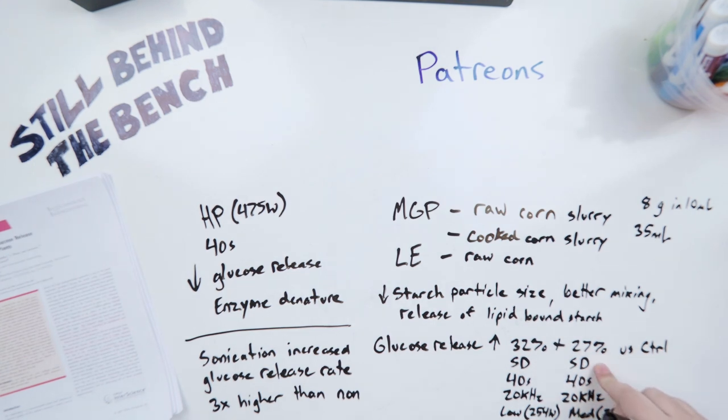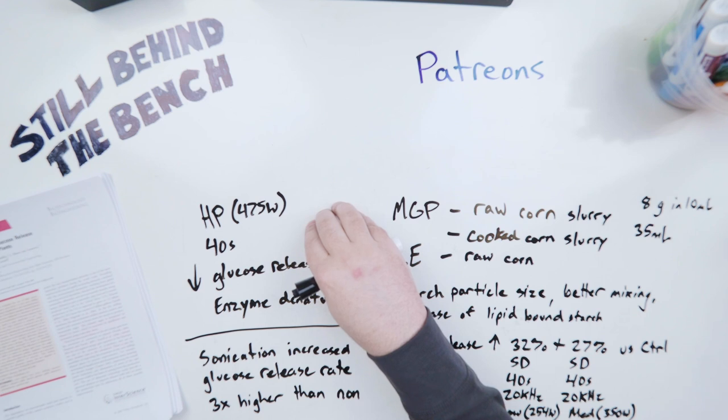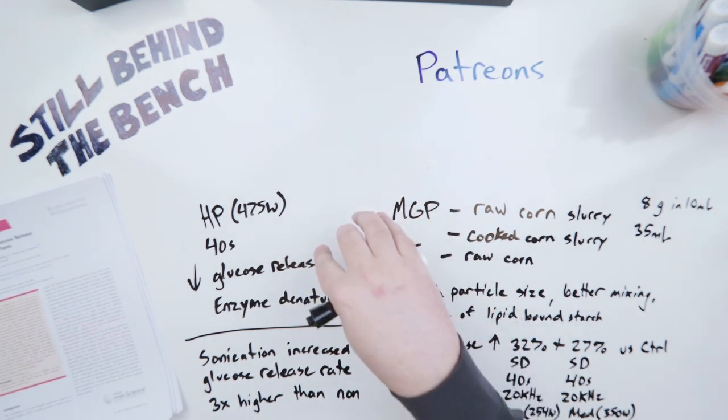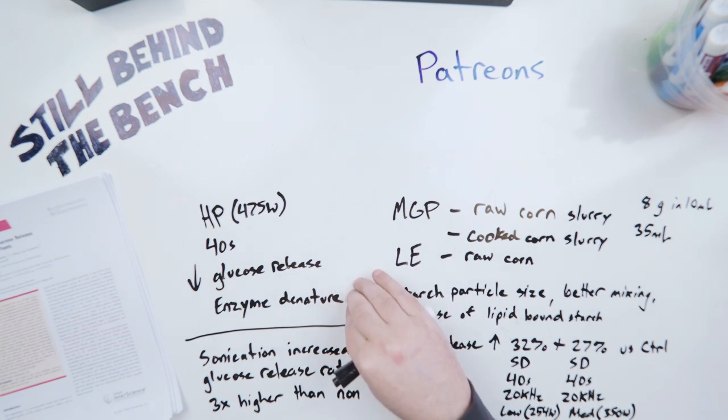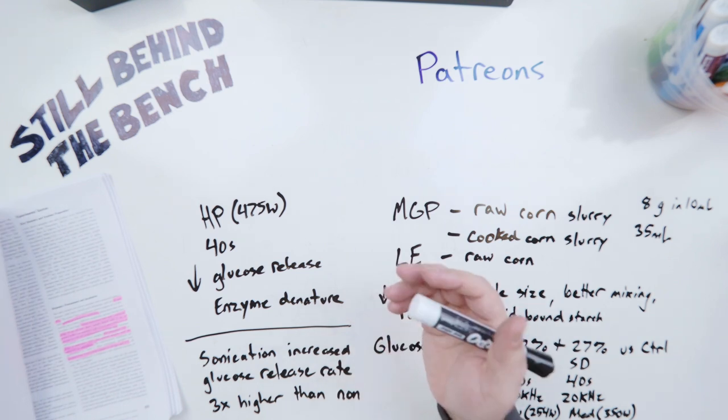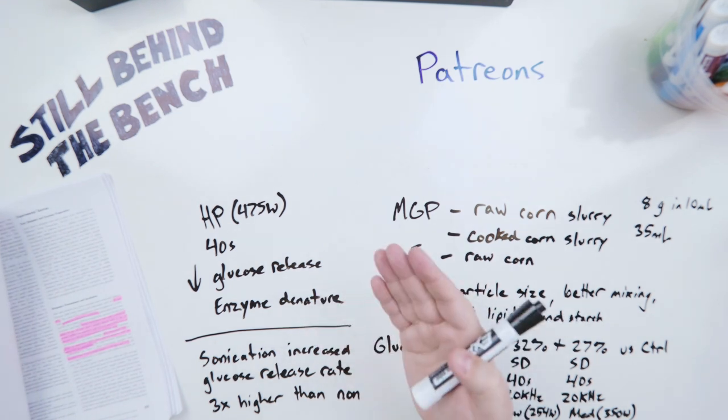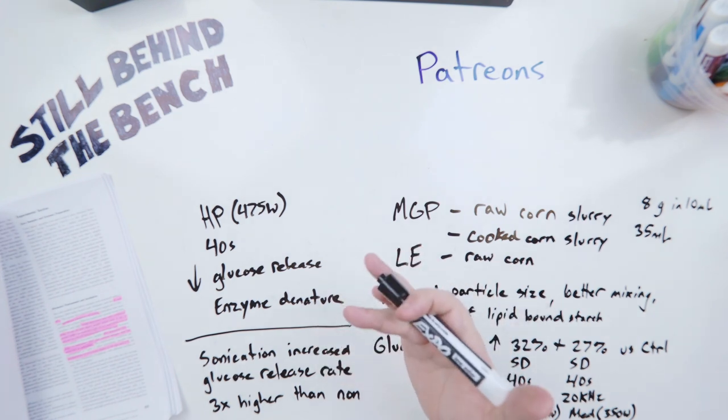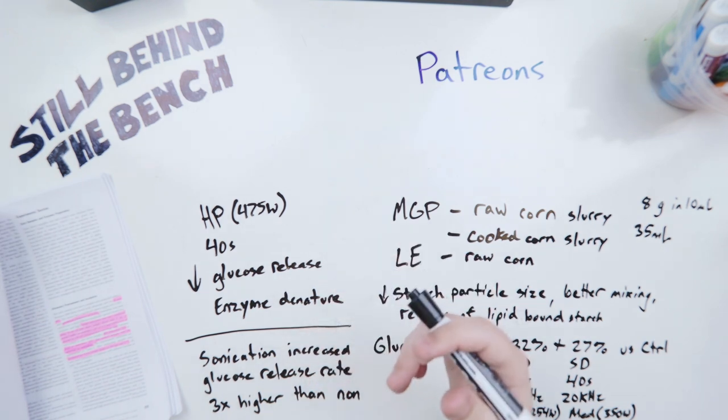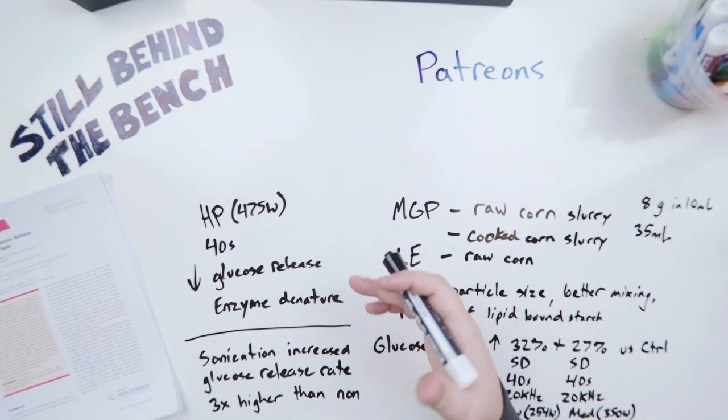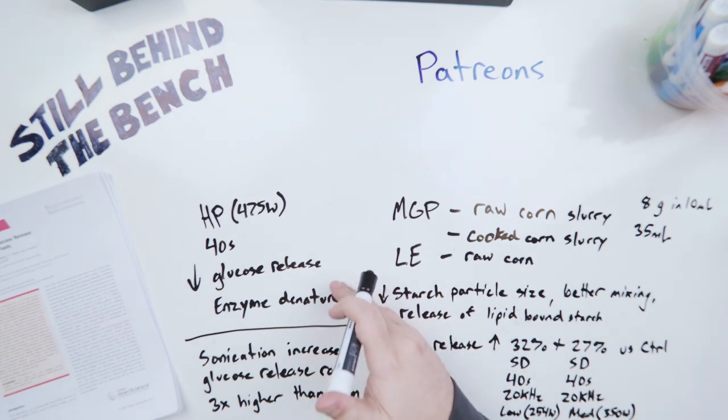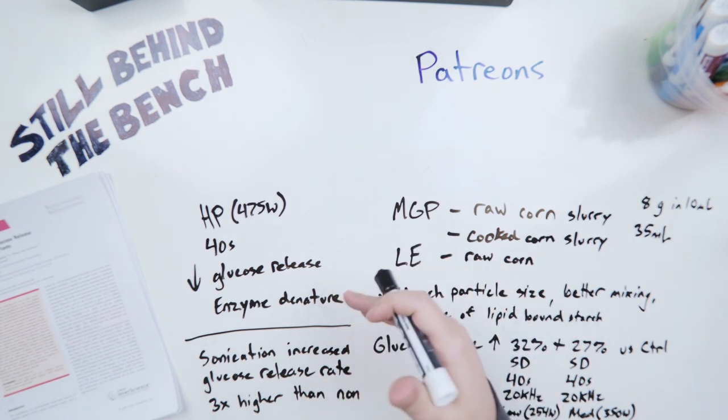At 32% with the enzymes added before they started sonication. They did sonication for 40 seconds at 20 kilohertz using the low power setting which was only 254 watts and they saw 32% more than just a cooked sample. For the medium power 350 watts they only saw a 27% increase versus the control. They then tried high power 475 watts 40 seconds 20 kilohertz. What they saw here was a precipitous drop. It dropped by 22% in glucose release. They're pretty sure it had to do with enzyme denaturation. They used Stargen 001 from Genicor International, an alpha amylase, and an amyloglucosidase from Sigma Ultra. I'm wondering if they'd use something like a high temperature enzyme if this high power would have worked better because high temperature enzymes are more robust. They can absorb more energy before they start to break down.